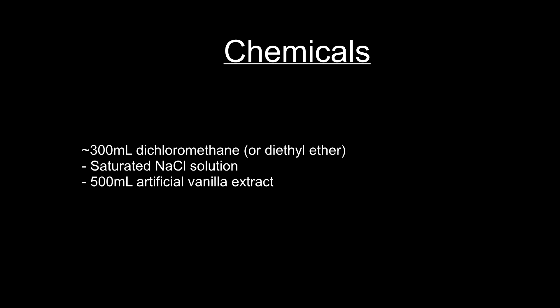For this experiment you'll need about 300 milliliters of dichloromethane, saturated salt solution, and about 500 milliliters of artificial vanilla extract. It is important to use the artificial stuff which contains almost solely vanillin, whereas the natural stuff contains many more compounds. Also, the amount of vanillin in the artificial extract ranges widely and the amount you'll get will depend on the brand you use.